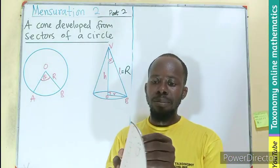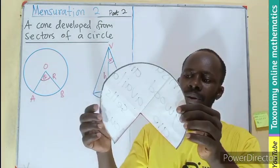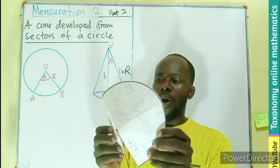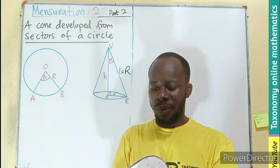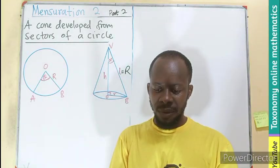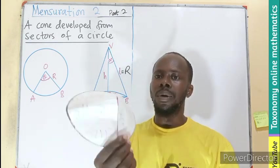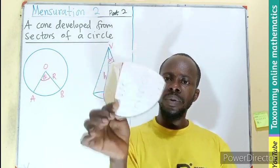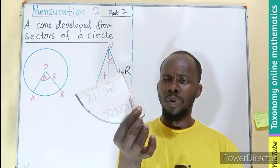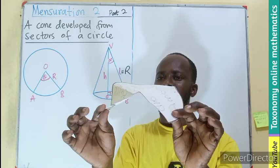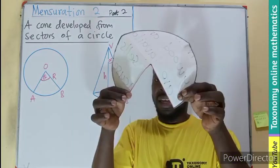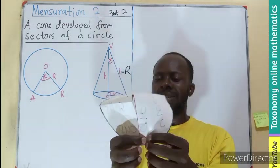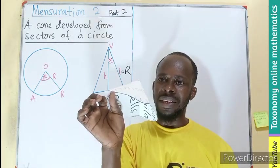In the case of the major sector, we take away the minor. Now we can also fold, which is very easy. So this is the cone. This is also a cone whereby the radius which we have here is also becoming the slant height. I believe we get it.